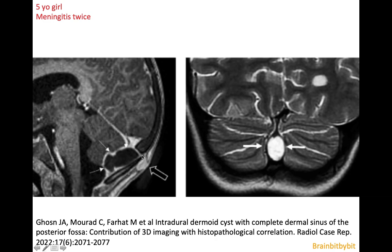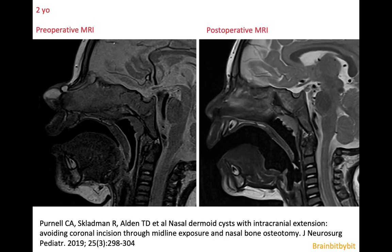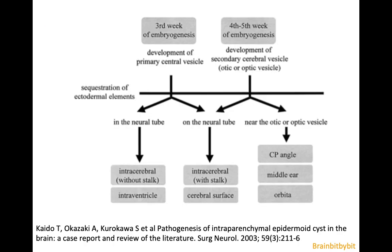This girl has had meningitis twice, and there's not only meningitis but also infection of the cyst. In case of infection, the cyst wall can enhance. Another place where you can often see a dermal sinus tract with a dermoid cyst is in the subcutaneous tissue of the nose, connecting to the frontobasal region of the brain. There are not only dermoid cysts, but also epidermoid cysts.